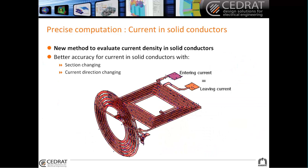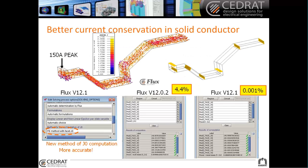Also, concerning physics, we corrected a new method to evaluate the current density inside solid conductors. Before, when you had section changing or current direction changing, like in this kind of conductor, it was not very accurate. Previously, you could have accurate results, but you needed to mesh it very thinly. Now, with a normal mesh, without doing something very demanding, you can have very good results. It's a very good innovation for all solid conductor users.